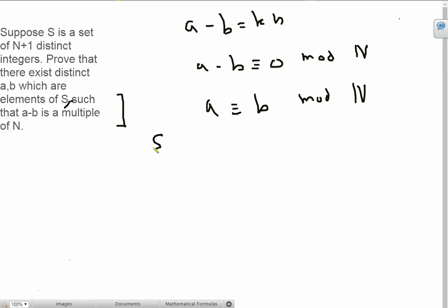And now, we have the set over here, S, which has n plus one elements, a1, a2, a3, all the way until a n plus one. Now, let's think about the different remainders we can get when we divide each of these terms by n.